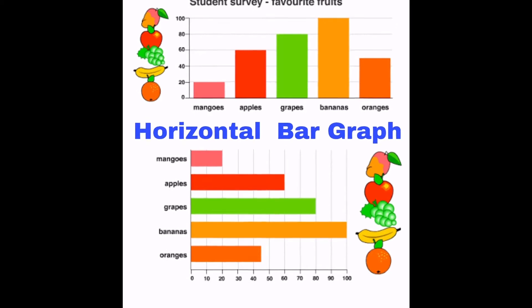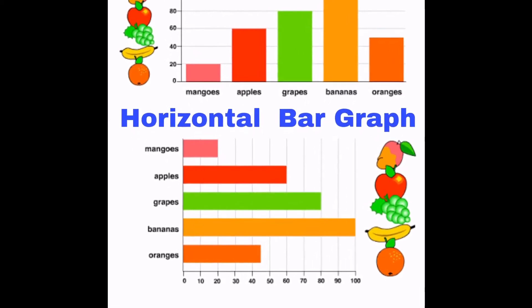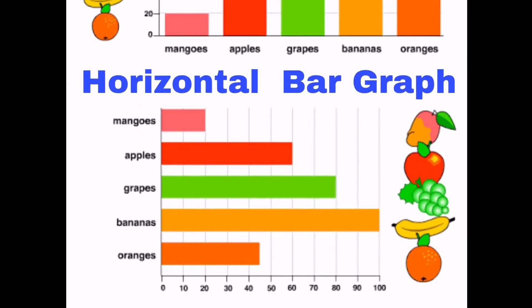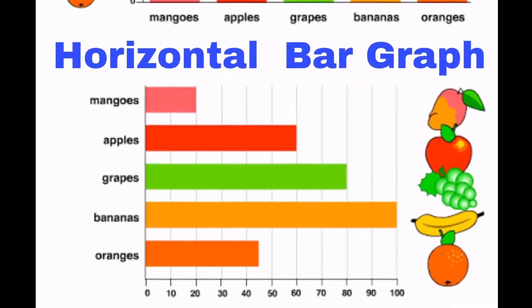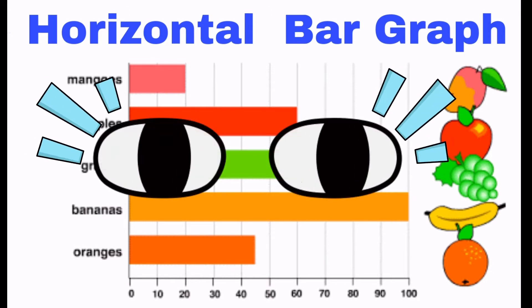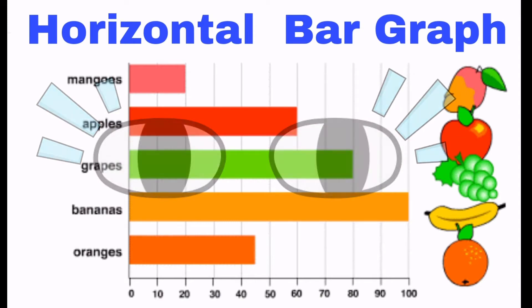While, when we take a closer look at the horizontal bar graph, the data doesn't look like buildings anymore. Instead, it looks like a road. A road that is short and a road that is long. Whenever we analyze a horizontal bar graph data, our eyes move from left to right to study or analyze it.